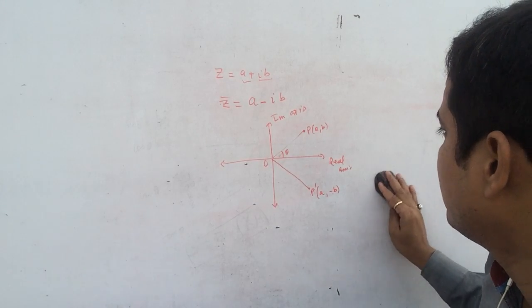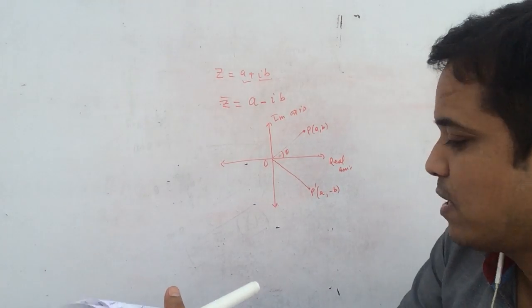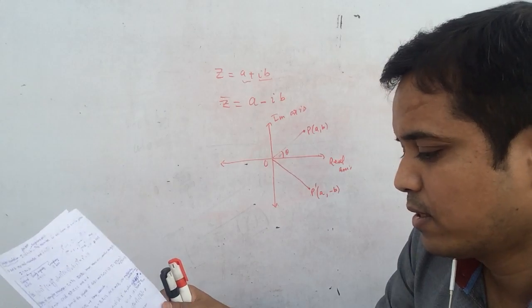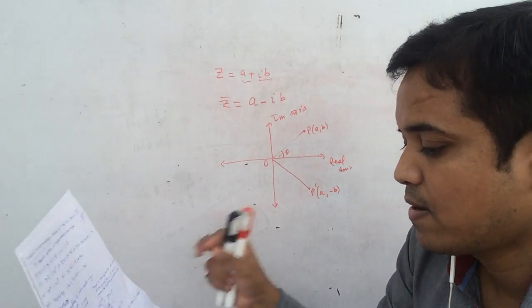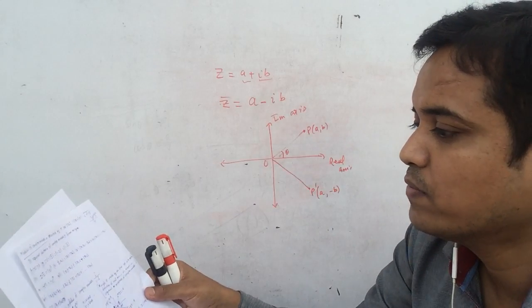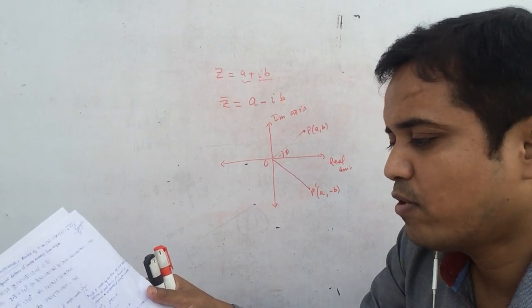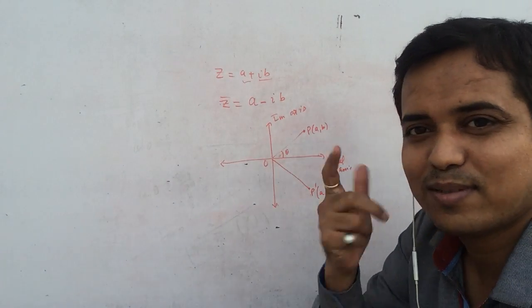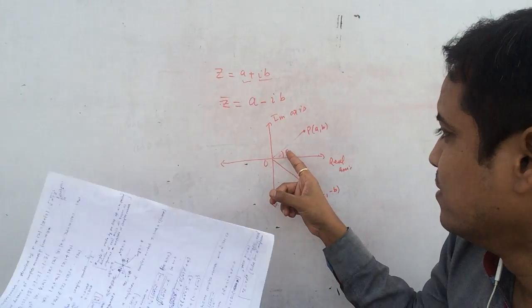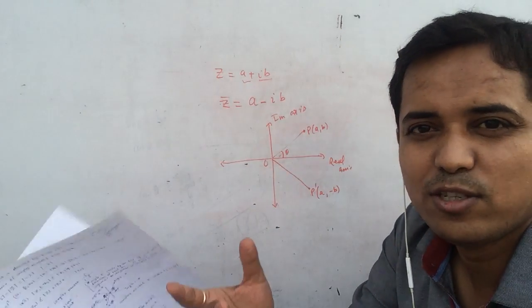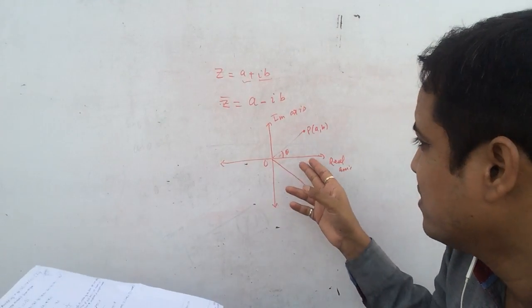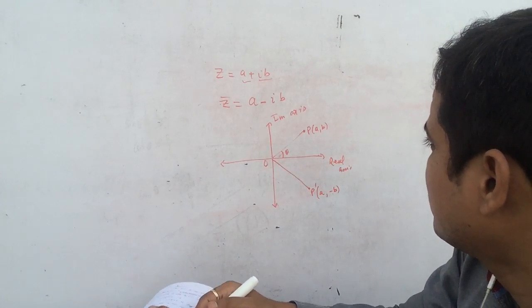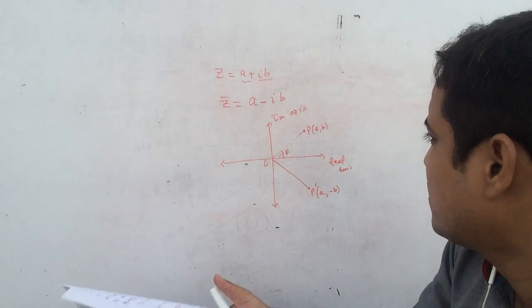Now we will do the principal value of the argument. How would you find the principal value of the argument? Generally we take theta from 0 to 2π, but since you can take any value of theta, we have to find the principal value.